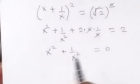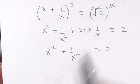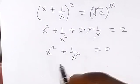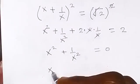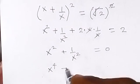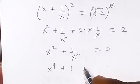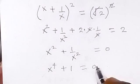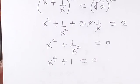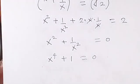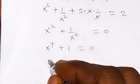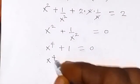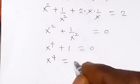Now we can use the LCM, multiplying through by x squared. We get x to the power 4, plus x squared equals 0. From here, x to the power 4 equals minus 1.